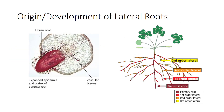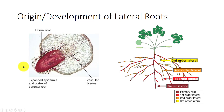Lateral roots are initiated by cell divisions in the pericycle. Some cells of the pericycle divide and form a small root primordium, organizing it into a root apical meristem. By the time the lateral root emerges, it has formed a root cap and its first proto-xylem and proto-phloem elements have begun to differentiate, establishing a connection to the vascular tissues of the parent root. This concludes the internal structure of roots.